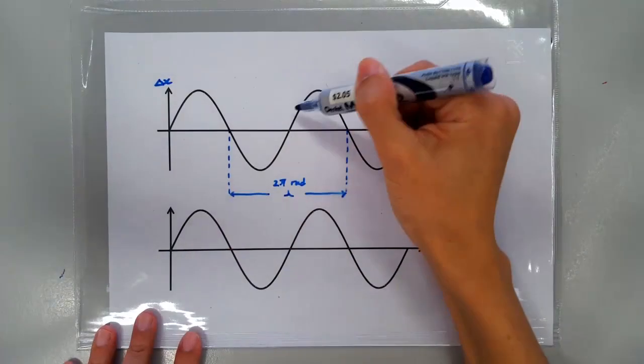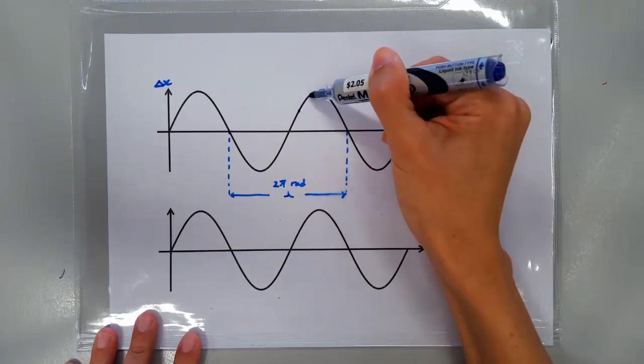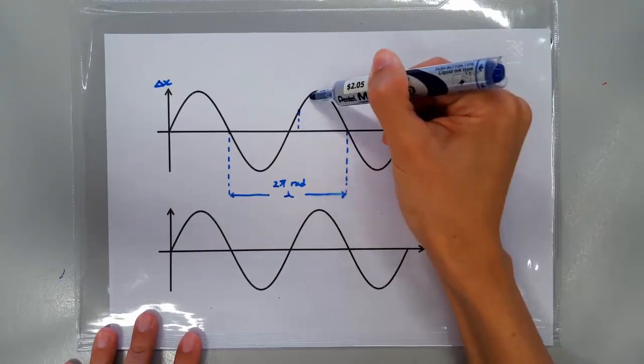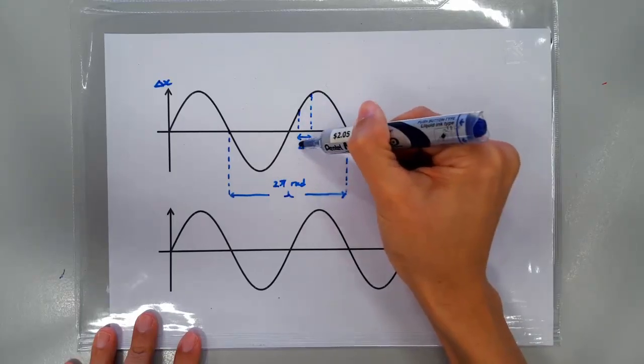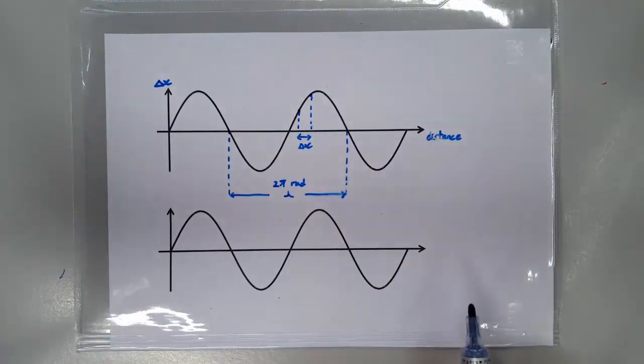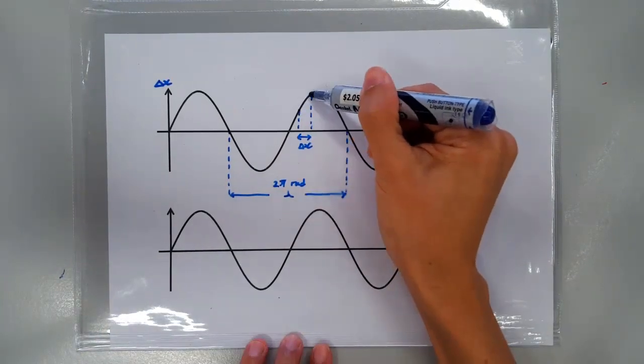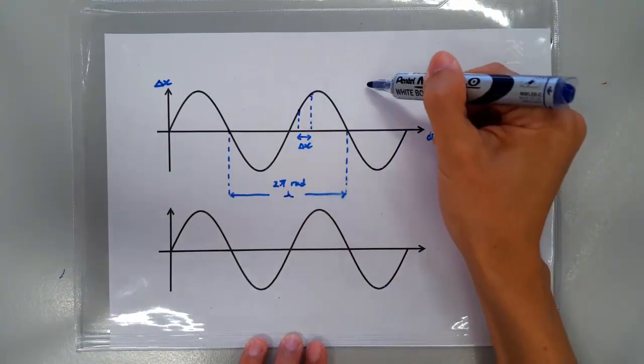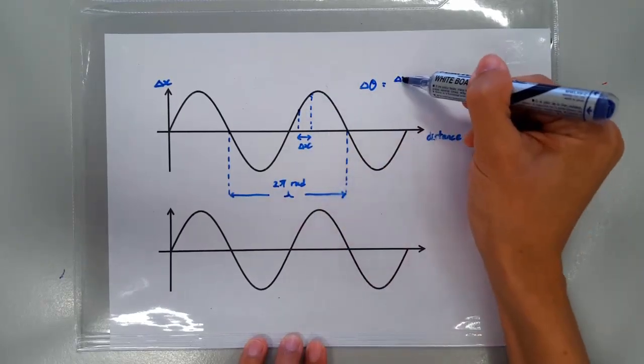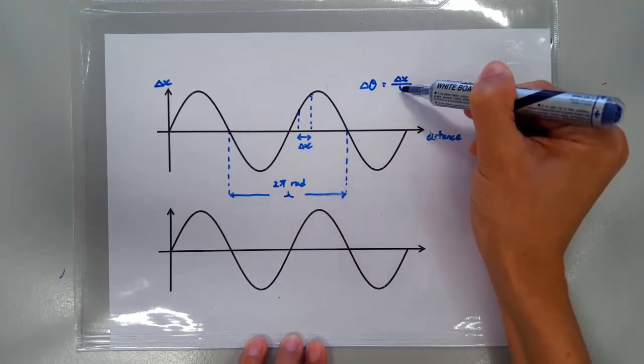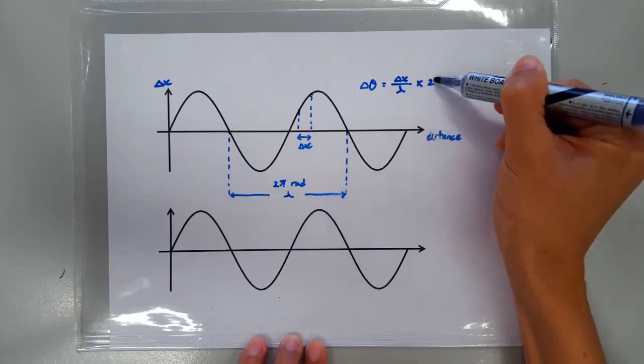So, in general, if we are talking about two points which are separated by a distance of Δx, then the phase difference between these two points would be, let me write it out, the phase difference between these two points would be Δx divided by λ times 2π.